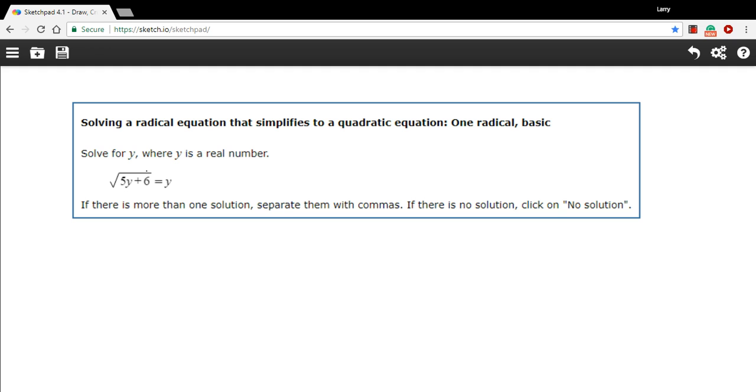So when we solve a radical equation, we typically try to get the radical sign on one side alone, and then square both sides of the equation. We're going to do the same thing here. So we'll square this side and we'll square this side.